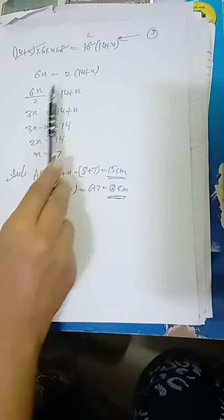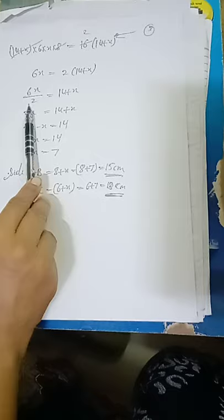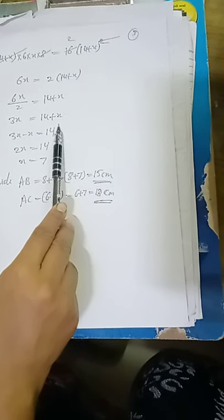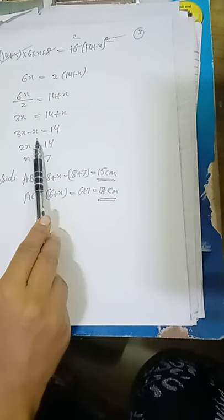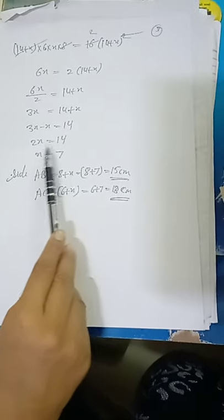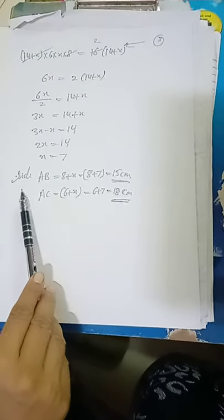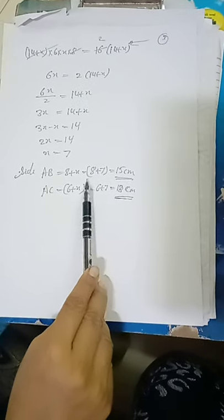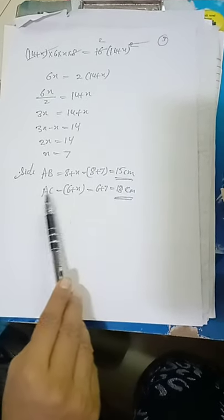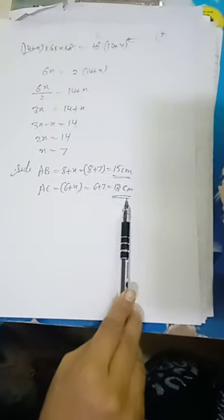So 2 into 14 plus x equal to 6x. 2 shifts to denominator on LHS. So 3x equal to 14 plus x. 3x minus x equal to 14. So 2x equal to 14 and x equal to 7. Now side AB equal to 8 plus 7 which is 15, and AC equal to 6 plus 7 which is 13.